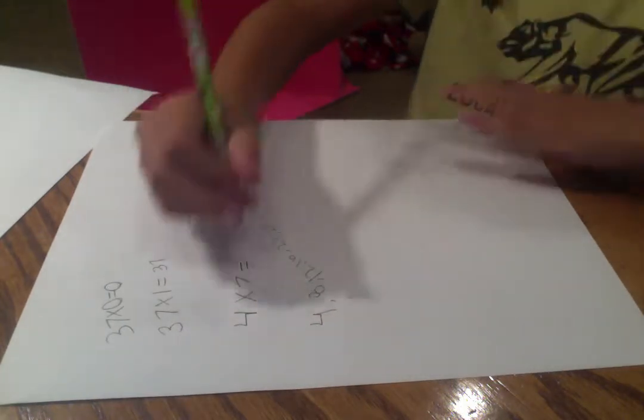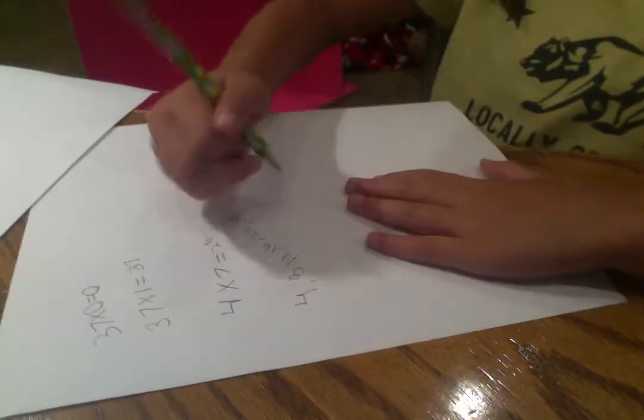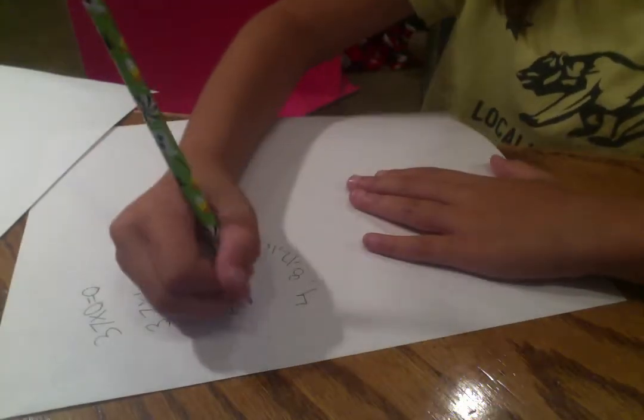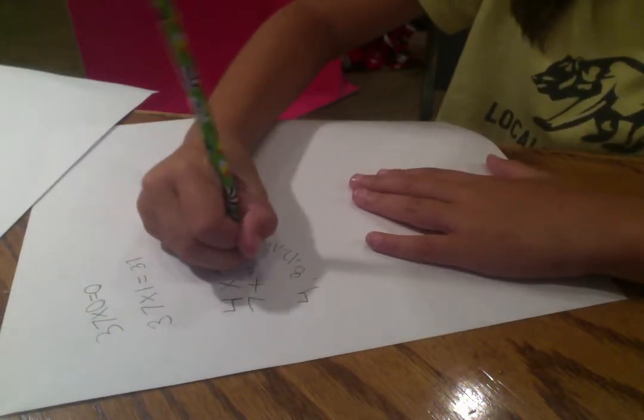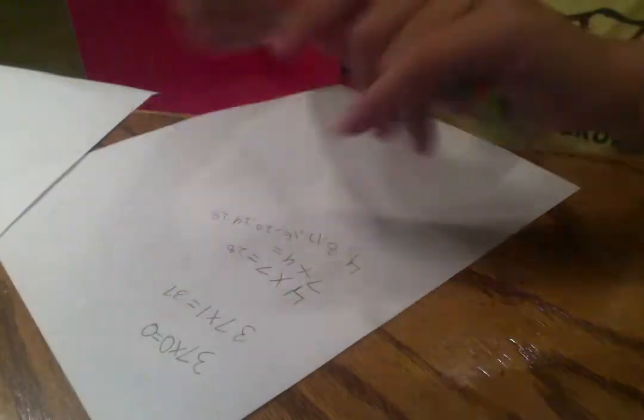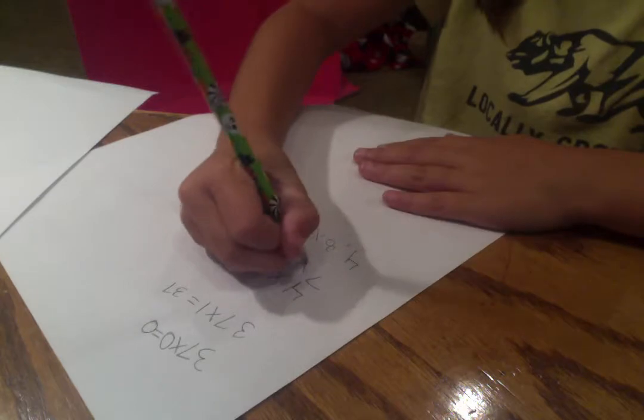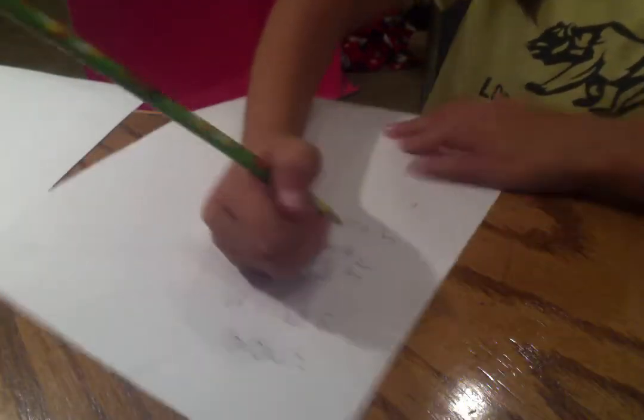So you figured out it's twenty... or you could do it the faster way. So you know it equals twenty-eight already. And you could just turn it around. Seven times four, it will still equal the same thing, it just turned around.